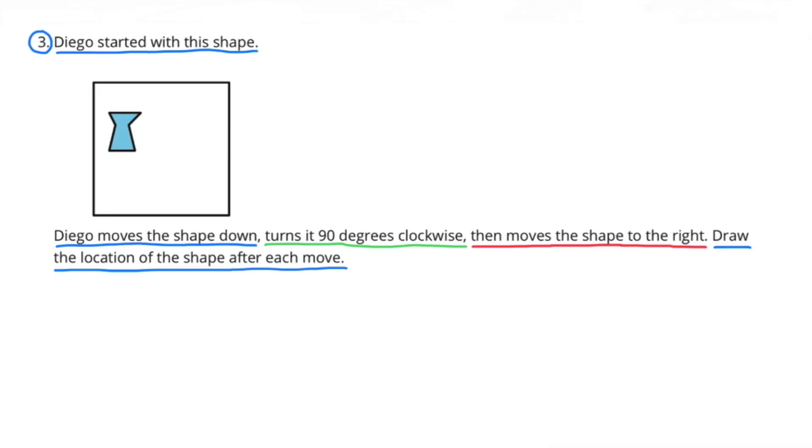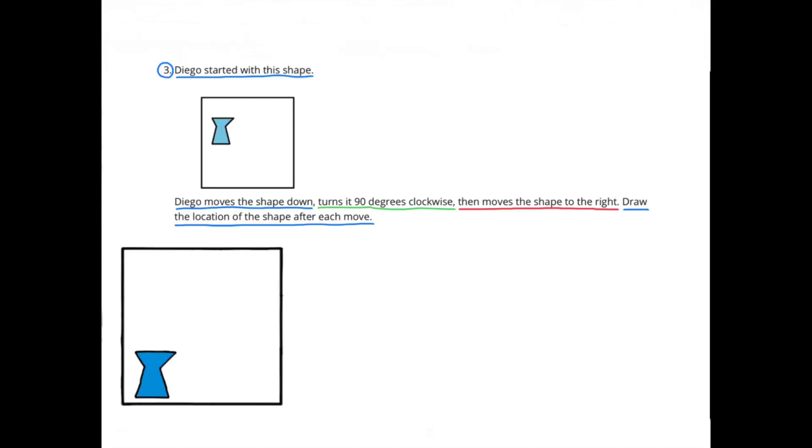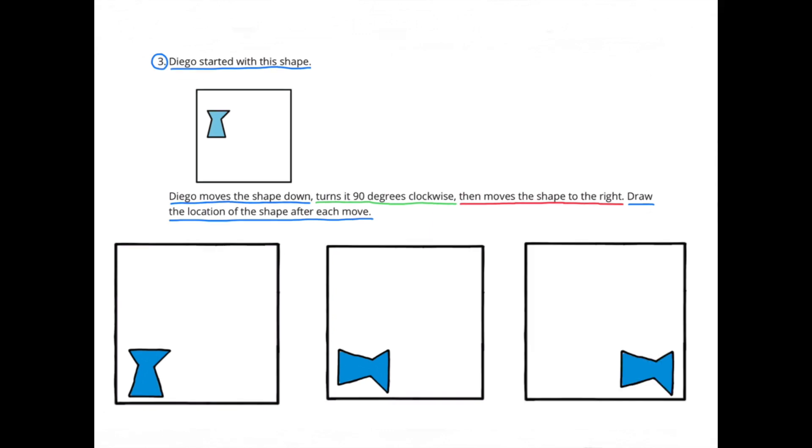Number 3. Diego started with this shape. Diego moves the shape down, turns it 90 degrees clockwise, then moves the shape to the right. Draw the location of the shape after each move. Here's a look at the location of the shape after each of the three moves.